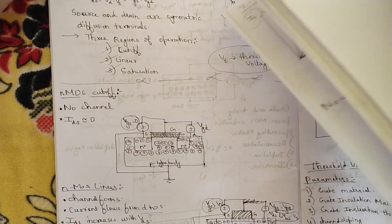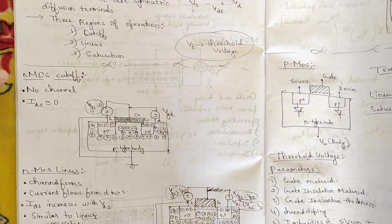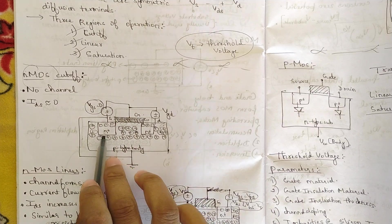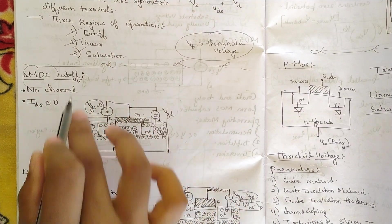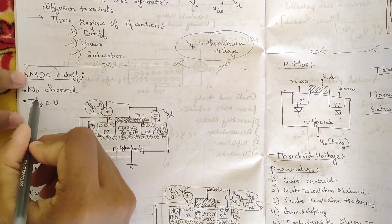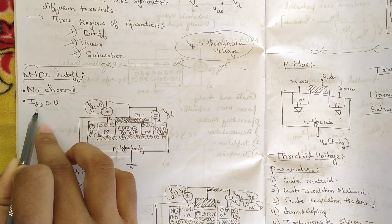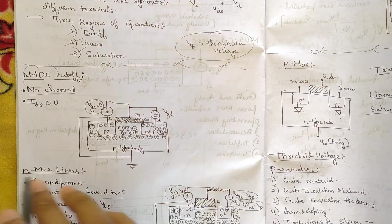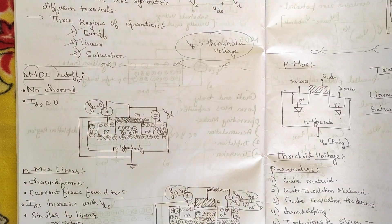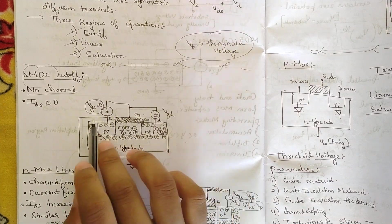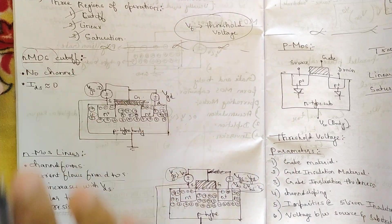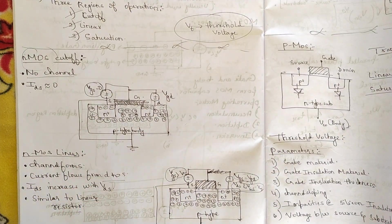First, let us look at NMOS in the cutoff region. This is a simple NMOS transistor with a P-type substrate and N+ source and drain. In the cutoff state, no channel is formed. The drain-to-source current IDS equals zero since VGS equals zero. There is no interconnection between the terminals, and individual voltage supplies are provided between all three terminals.